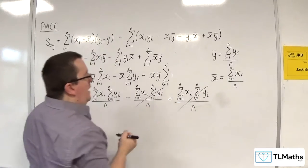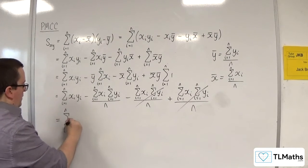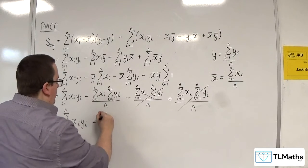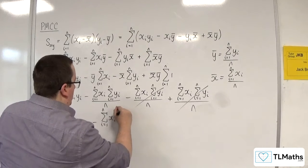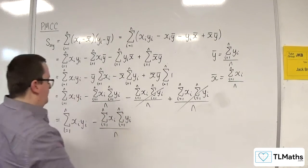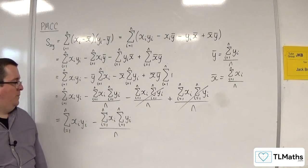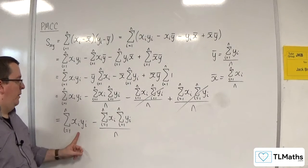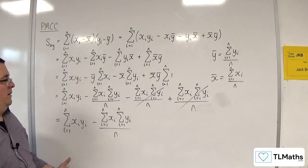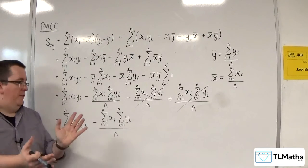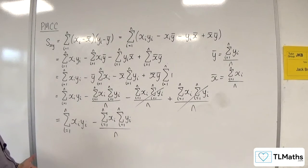So I'm left with the sum from i=1 to n of x_i·y_i, take away the sum from i=1 to n of x_i times the sum from i=1 to n of y_i, all over n. And that is S_xy in summary statistic form, because I've got the sum of x_i·y_i, the sum of x's, the sum of y's, and n — all things I could get from my calculator, or simply be given to substitute into the formula.